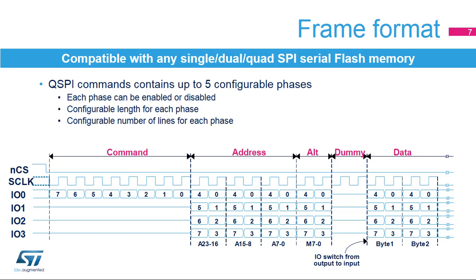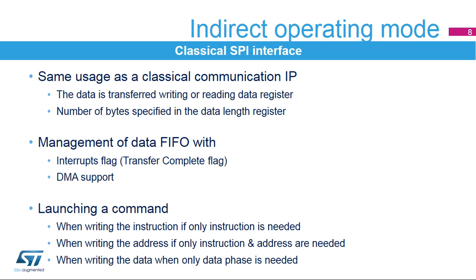The Quad SPI Memory Interface offers high flexibility in frame format configuration. This flexibility allows addressing of any serial flash memory. Users can enable or disable each of the five phases and configure the length of each phase as well as the number of lines used for each phase. The Quad SPI Memory Interface, used in Indirect Operating Mode, behaves like a classical SPI interface. Transferred data goes through the data register with FIFO. Data exchanges are driven by software or by DMA, using related interrupt flags in the Quad SPI status registers.